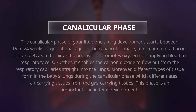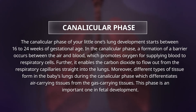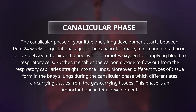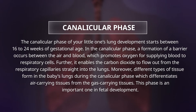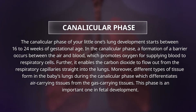The canalicular phase of your little one's lung development starts between 16 to 24 weeks of gestational age. In the canalicular phase, a formation of a barrier occurs between the air and the blood, which promotes oxygen for supplying blood to respiratory cells. Further, it enables the carbon dioxide to flow out from the respiratory capillaries straight into the lungs. Moreover, different types of tissue form in the baby's lungs during the canalicular phase, which differentiates air-carrying tissues from the gas-carrying tissues. This phase is an important one in fetal development.